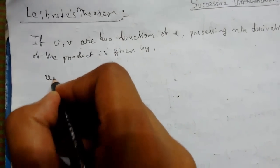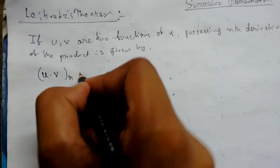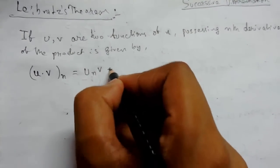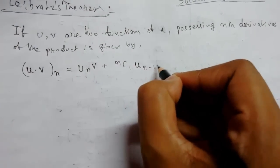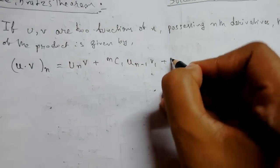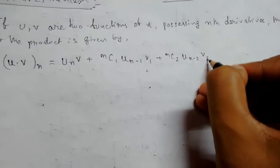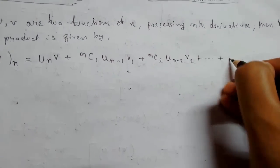u·v nth order derivative which will be u_n·v + nC1·u_(n-1)·v_1 + nC2·u_(n-2)·v_2 plus